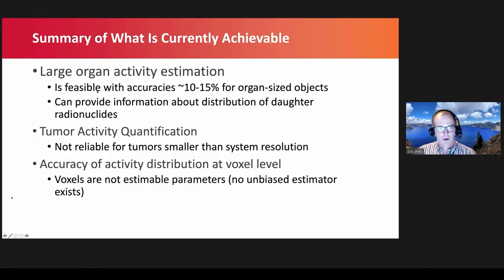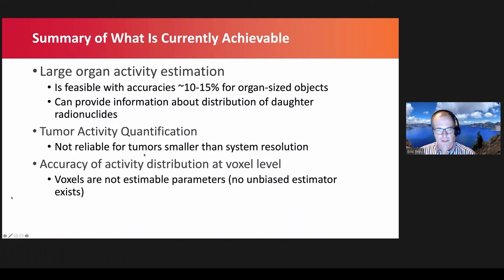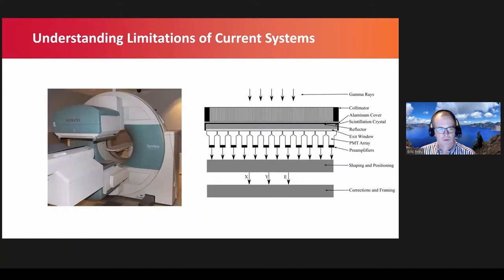In summary of what's currently achievable: even for difficult radionuclides, 10 to 15% accuracy is achievable for organ-sized objects. We can provide some information about the distribution of daughter radionuclides in some cases, though perhaps not as good as one might like. Tumor activity quantification is achievable for large tumors but not reliable for small tumors. At the voxel level, individual voxels are really not estimable parameters — with current systems we're just not able to get very good estimates as inputs for 3D dosimetry.